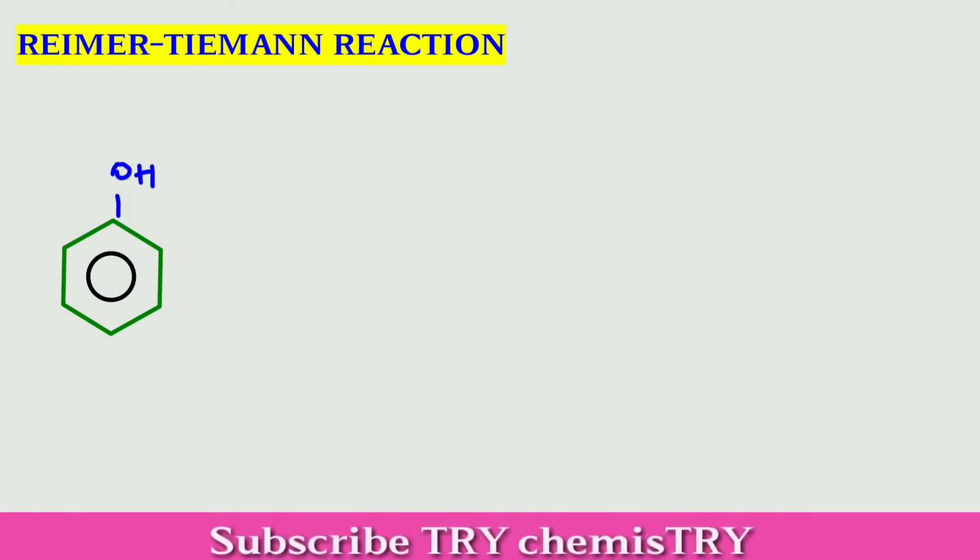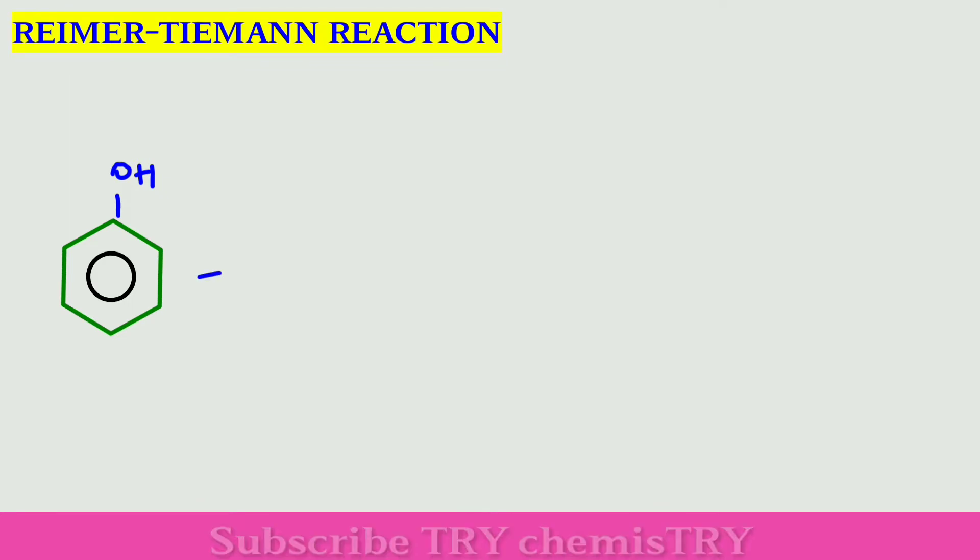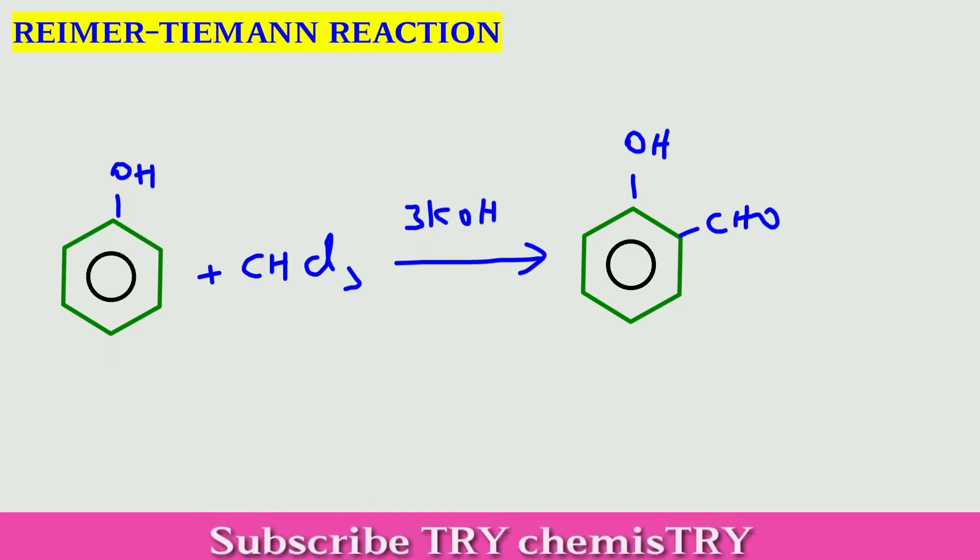In this reaction, when phenol is treated with chloroform in the presence of alkali like sodium hydroxide or potassium hydroxide, it gives salicylaldehyde. So in this reaction we can convert phenol to salicylaldehyde.